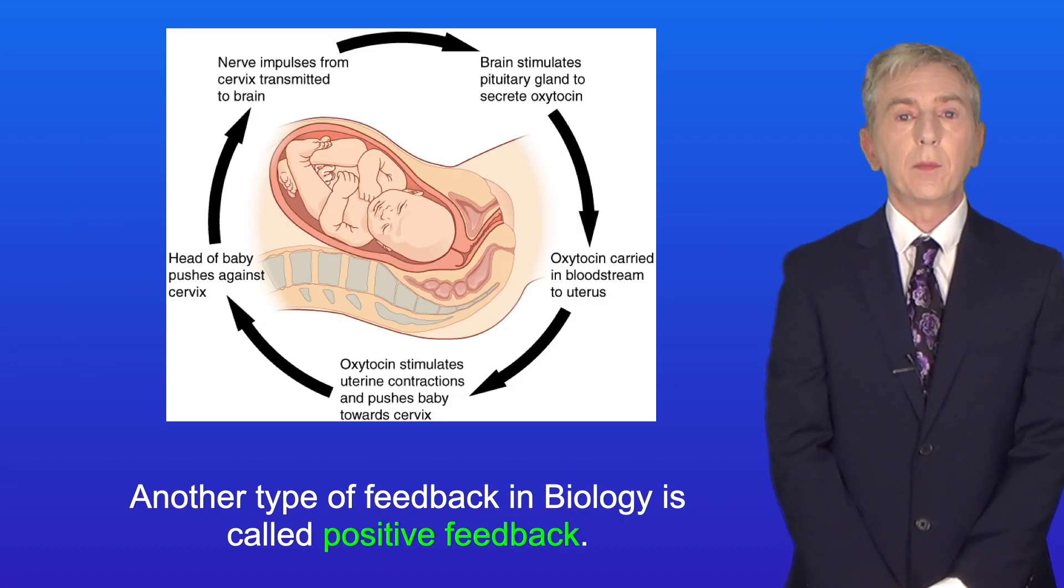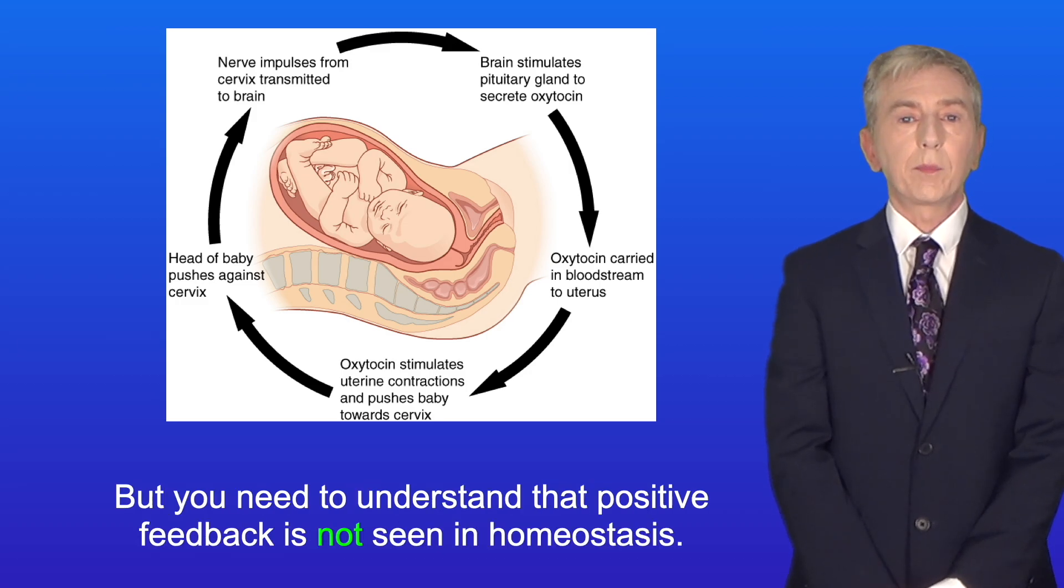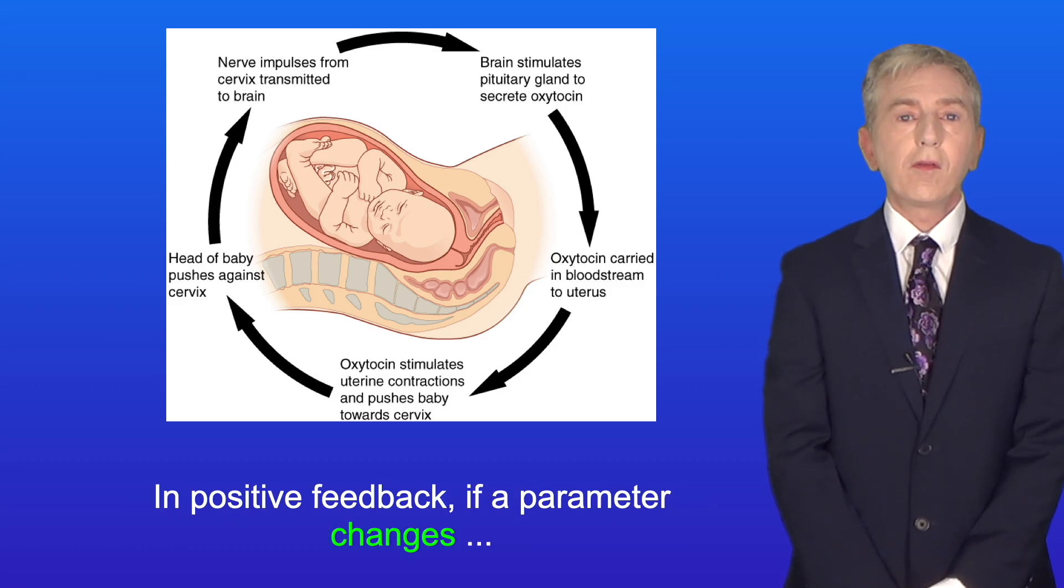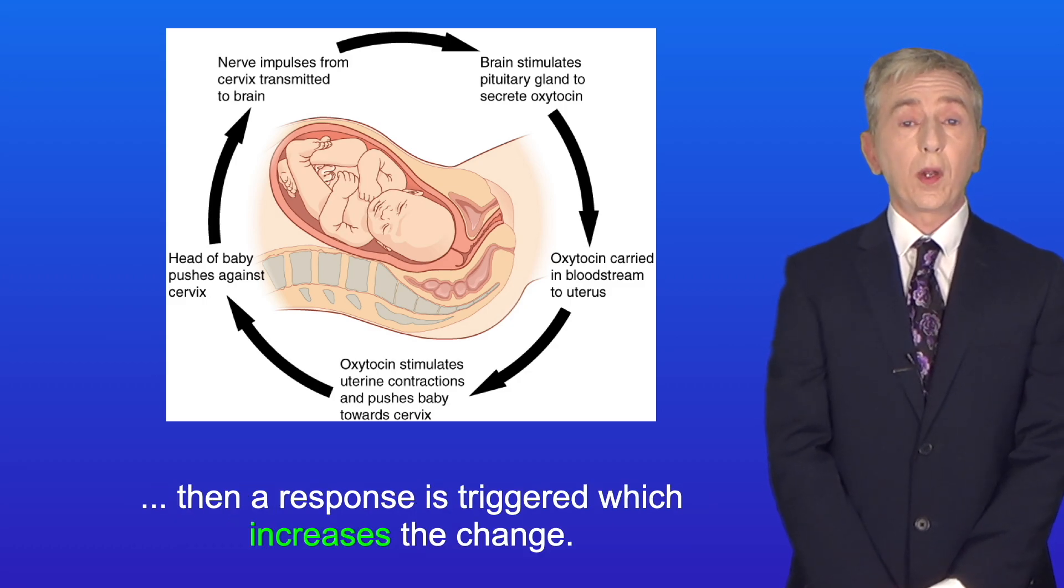Okay, now another type of feedback in biology is called positive feedback. But you need to understand that positive feedback is not seen in homeostasis. In positive feedback, if a parameter changes, then a response is triggered which increases the change.